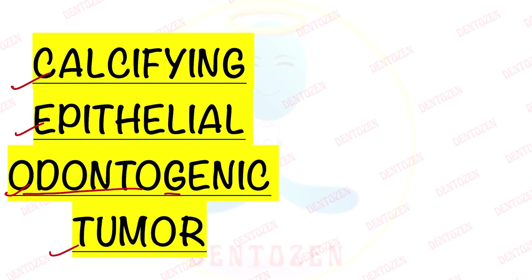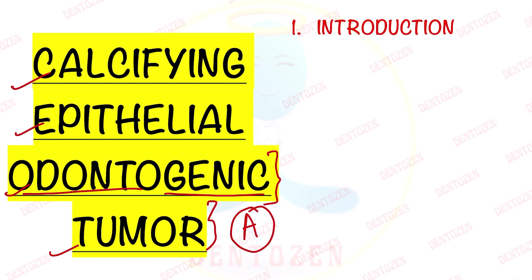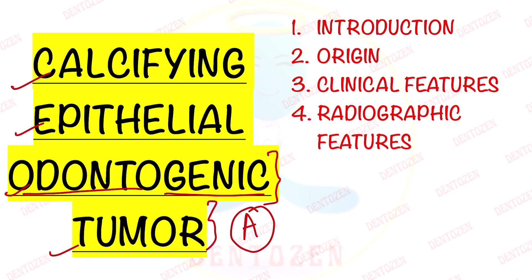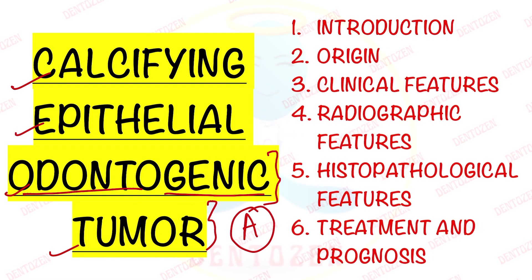Odonto means tooth, genic means forming, because it forms from tooth forming tissues. It is known as an odontogenic tumor, similar to its friend ameloblastoma which is also an odontogenic tumor. In this video we are going to discuss introduction, clinical features, radiographic features, histopathological features, treatment and prognosis of calcifying epithelial odontogenic tumor, which can come as a long question for you.